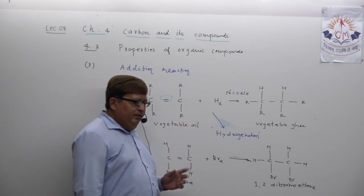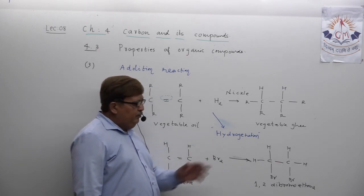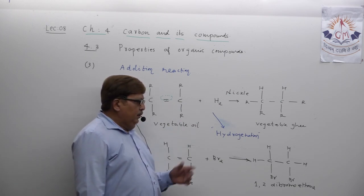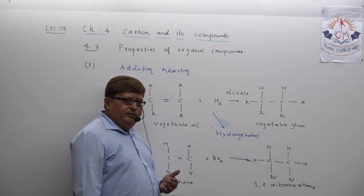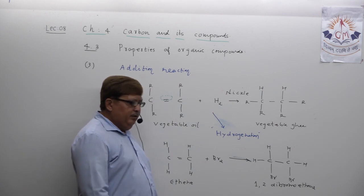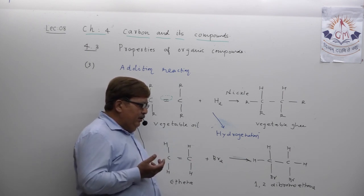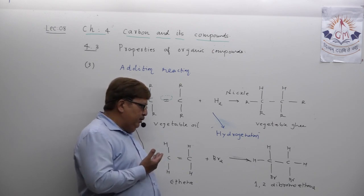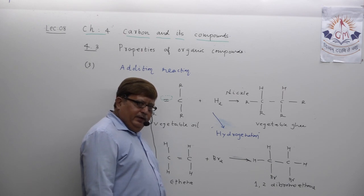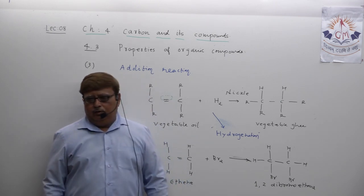The same question can also be asked as: 'Explain hydrogenation,' or 'How is vegetable ghee prepared from vegetable oil,' or 'What catalyst is used in hydrogenation?' — that is, nickel catalyst. This way, MCQs can be generated from this topic, and you need to be very concentrated when such MCQs appear. This completes the third property of organic compounds: addition reaction.